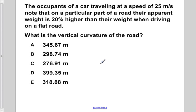The occupants of a car are traveling at a speed of 25 meters per second. Note that on a particular part of a road, their apparent weight is 20% higher than their weight when driving on a flat road. What is the vertical curvature of the road?